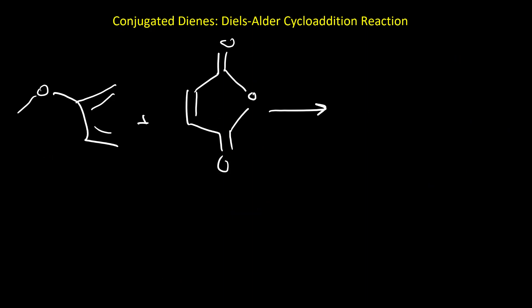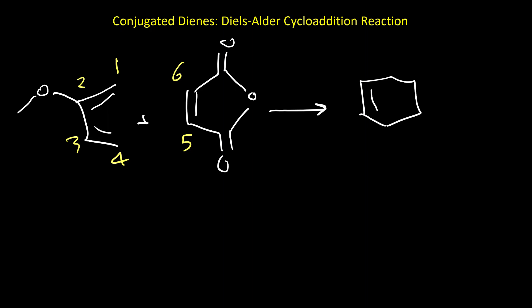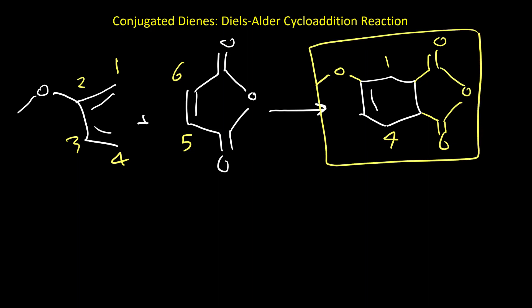Here is another example. This is our diene, carbons 1 through 4, and this is our dienophile, which has two electron-withdrawing carbonyl groups — making it a suitable dienophile. Again we should have a cyclohexene product. On carbon 2 we should have OCH3, and on carbons 5 and 6 we should have the two carbonyl groups with the rest of the molecule. This is our product for this reaction.